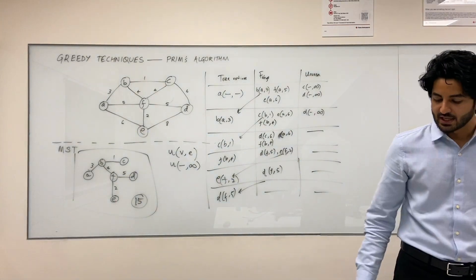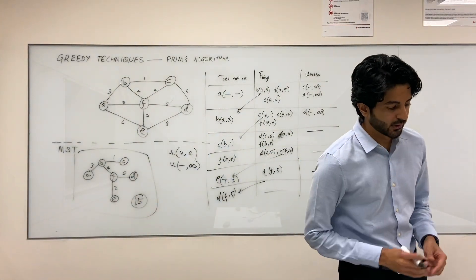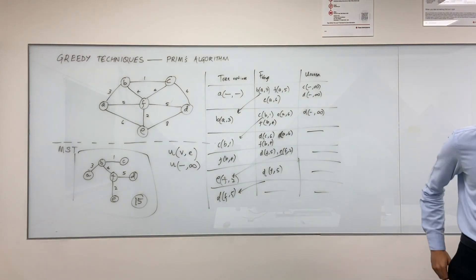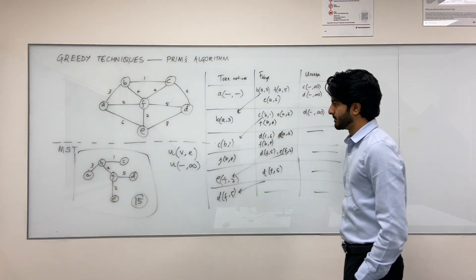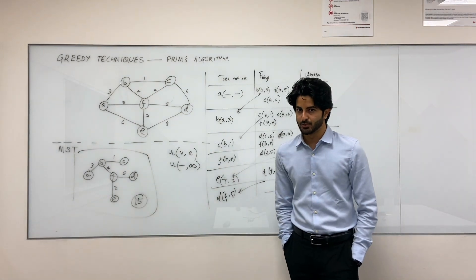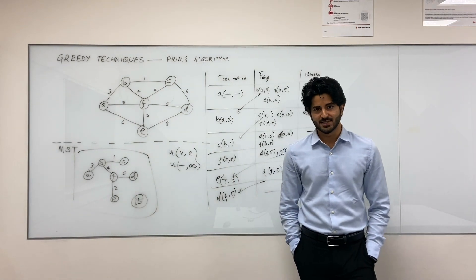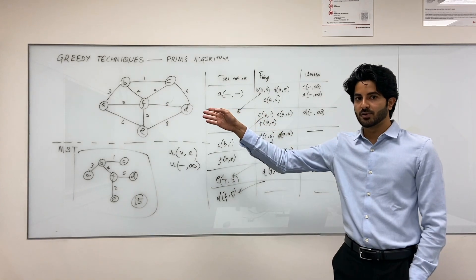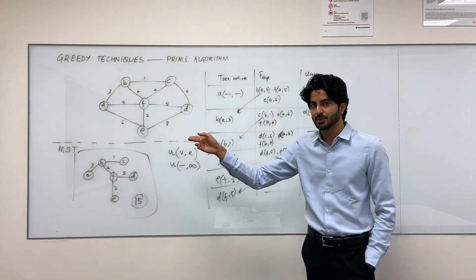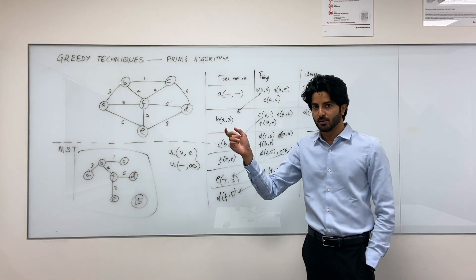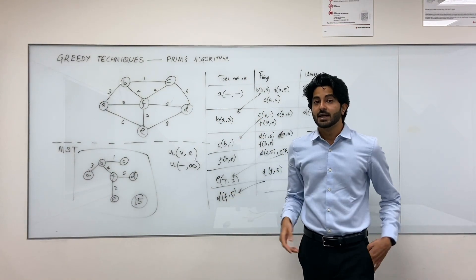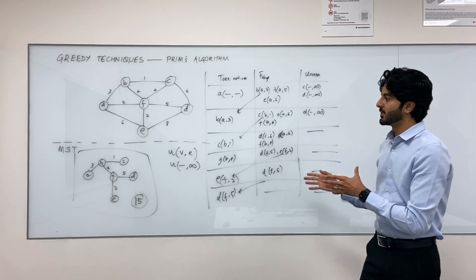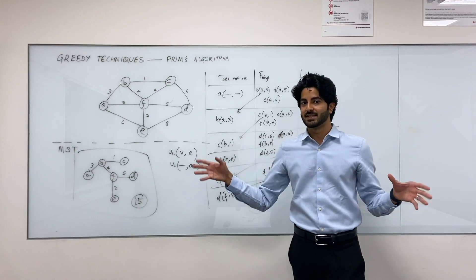Now that we have seen how Prim's algorithm works, let's look at whether this algorithm always generates an optimal solution for a given graph. Because that's important. We know that it works for this specific situation, but like we saw for the coin situation earlier, there was a case for a certain weird denomination where the greedy algorithm did not work. So it's really important to figure out whether Prim's algorithm absolutely works every single time.